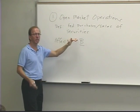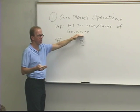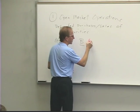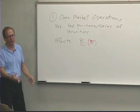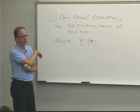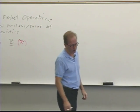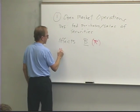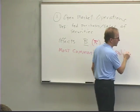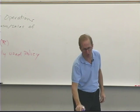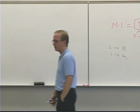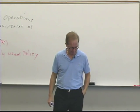Open market operations — purchases or sales of securities, usually treasury securities, sometimes government-sponsored enterprise securities — affect the monetary base, specifically bank reserves. This is the Federal Reserve's most commonly used policy. The Federal Reserve is buying or selling government securities every day or two; they don't go a week or two without any activity. It's an ongoing, constant sort of thing.